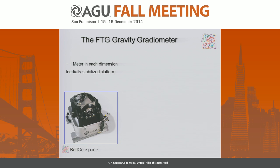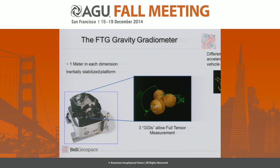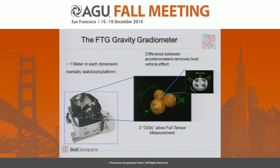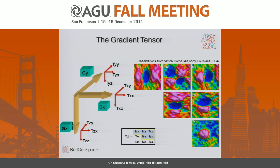The full-tensor gravity gradiometer, in case you're not familiar with it, is a washing machine-sized piece of equipment. Bell Geospace own and operates three of these systems as a commercial enterprise. It consists of an inertially-stabilized platform with three gradiometer instruments, each containing four accelerometers. This allows us to measure the full tensor of the gradient — the change in gravity across three components of space — giving nine combinations, of which five are independent.